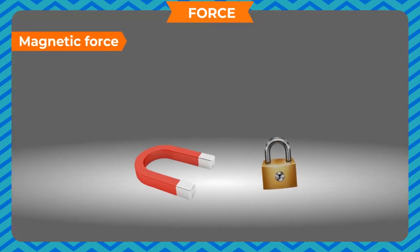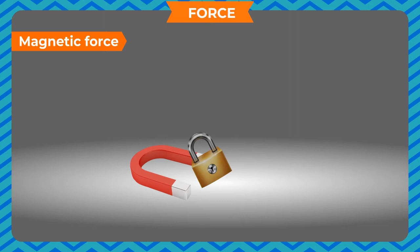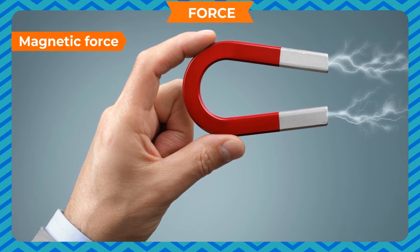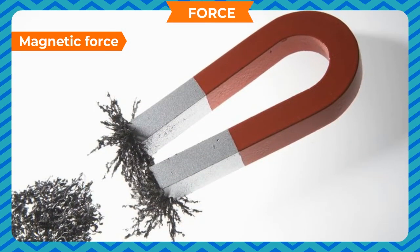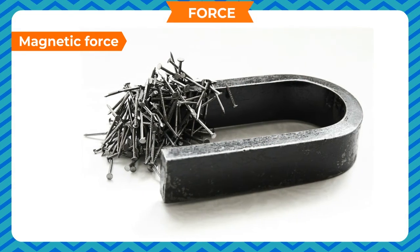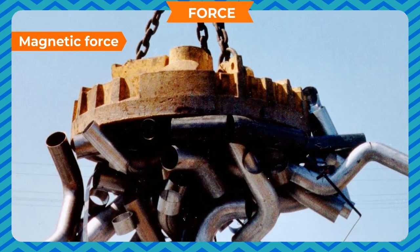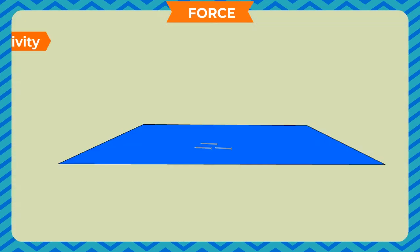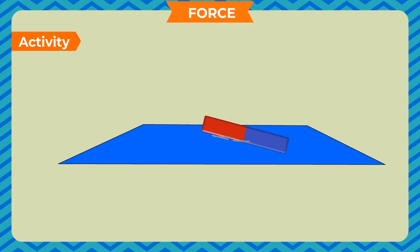Magnetic Force: Magnetic force refers to the force exerted by a magnet on a magnetic substance, acting from a distance. However, when the force has acted upon the object, they come into physical contact. Put some iron nails on a sheet of paper and bring a small magnet near them. You will see that the iron nails are pulled towards the magnet even when a little distance away, showing that magnetic force can act from a distance.